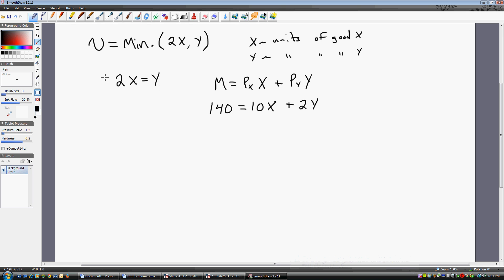All we're going to do now is take the utility maximizing condition here and plug it into the budget constraint. So Y equals 2X. Where we see a Y here, we're now going to write 2X. So we're going to get 140 equals 10X plus 2 times Y, where Y is 2X. So 140 equals 14X. So X is going to equal 10.